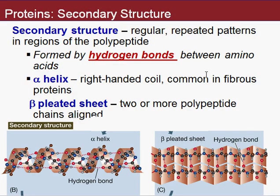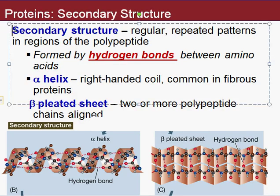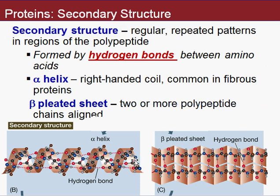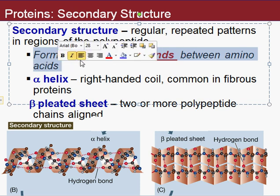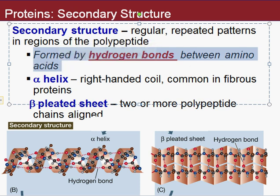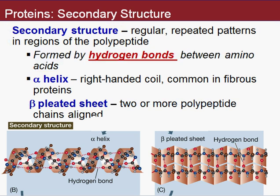The next level is called secondary structure. There are two types: the alpha helix, which is a twist or spiral, and beta pleated sheets. That long chain of amino acids twists into a helix because of hydrogen bonds between the amino acids, or forms pleated sheets because of hydrogen bonds between amino acids. Secondary structures are formed by hydrogen bonds between amino acids. Two types: alpha helix and beta sheets.